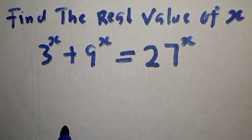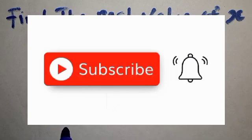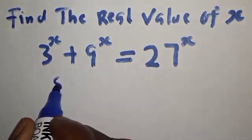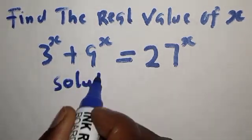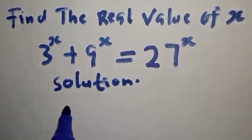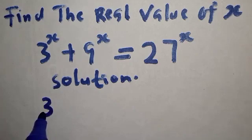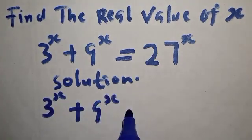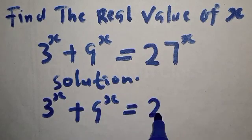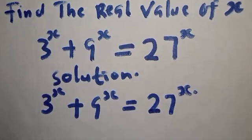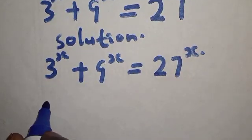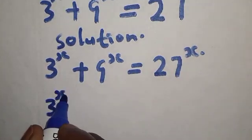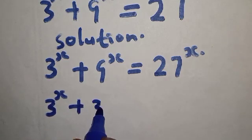But before we proceed, please don't forget to like, share, comment, and subscribe, and also turn on the notification bell so that you can be notified whenever we post new video solutions. So we have 3 raised to power x plus 9 raised to power x equal to 27 raised to power x. This can be rewritten as 3 raised to power x plus 3 raised to power 2x.